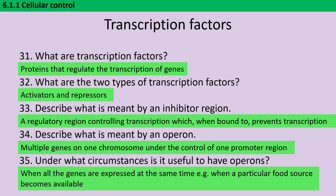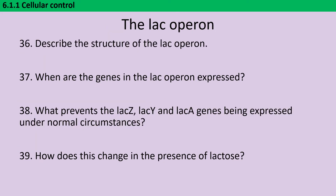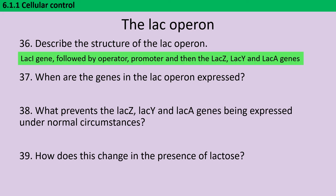The classic example is the lac operon, which is only going to be expressed when lactose is available and glucose is not available — in that situation, you always need all three genes to be expressed. The lac operon is made of the lac I or lac inhibitor gene, followed by the operator, the promoter, and then those three structural genes: lac Z, lac Y and lac A.